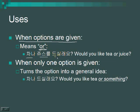차나 주스를 드실래요? — Would you like tea or juice? 차 is tea, 주스 is juice. 드시다 means to eat or drink, and the ending 래요? is a polite way of saying 'do you want to?' — so the full phrase means 'Would you like to drink tea or juice?'